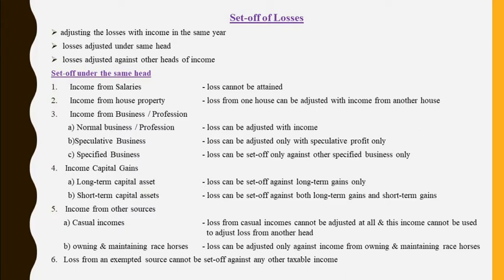The first one is set-off under the same head. Before going to set-off under the same head, there are five heads of income: income from salaries, house property, business or profession, capital gains, and other sources. We will see these one by one.